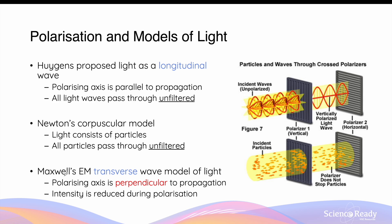Similarly, Newton's corpuscular model, which describes light as a stream of particles, also could not explain polarisation as light corpuscles would just pass through polarisers unfiltered. The phenomenon of polarisation validated Maxwell's electromagnetic transverse wave model of light. In this model, Maxwell described light as a product of oscillating electric and magnetic fields that propagate in the same direction. The transverse wave model explains why light intensity is reduced when light of a specific polarising axis tries to pass through a polariser, as a polariser will only let light of a certain polarising axis pass through. As discussed using Malus's law, if the polarising axis is perpendicular to the transmission axis of the polariser, then no light will be able to pass through. In summary, polarisation validates Maxwell's transverse wave model and refutes Huygens' longitudinal wave model and Newton's corpuscular model of light.